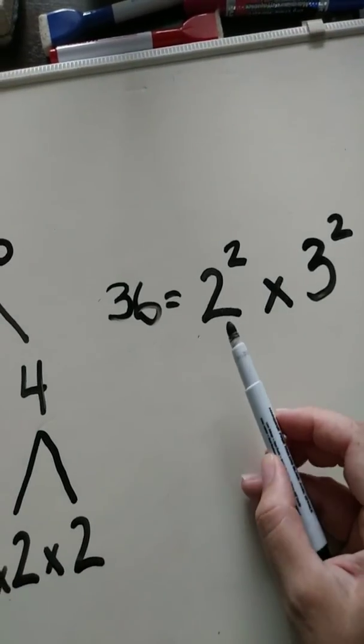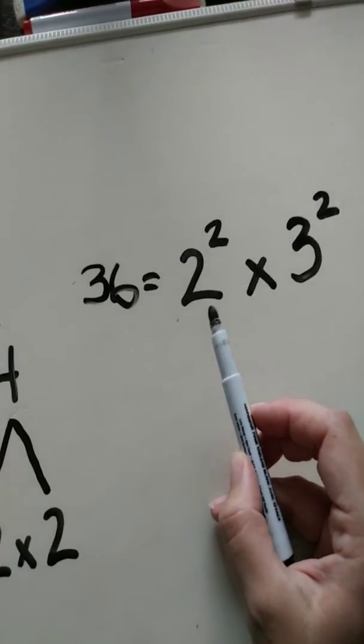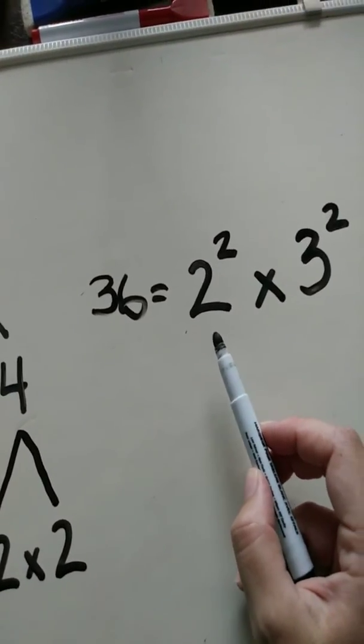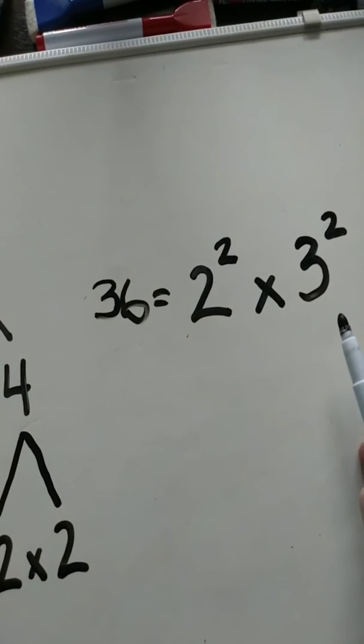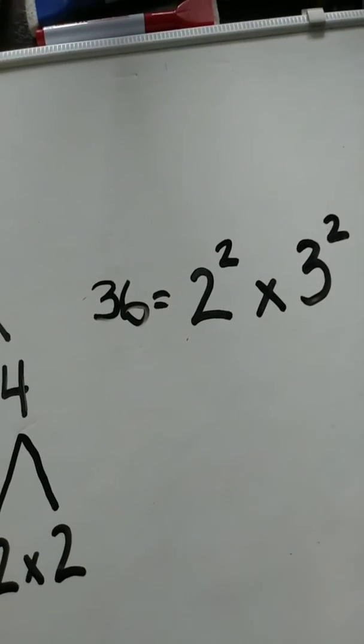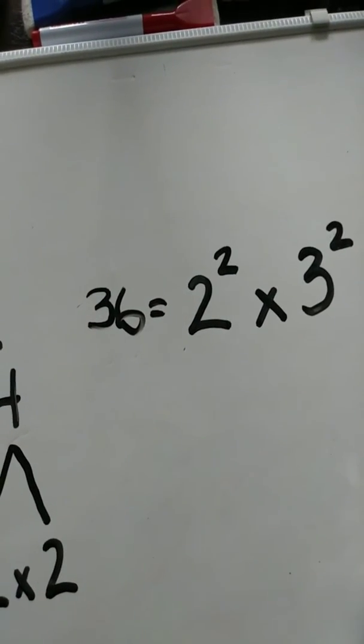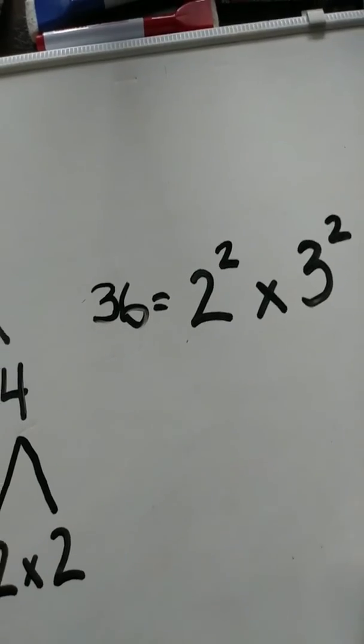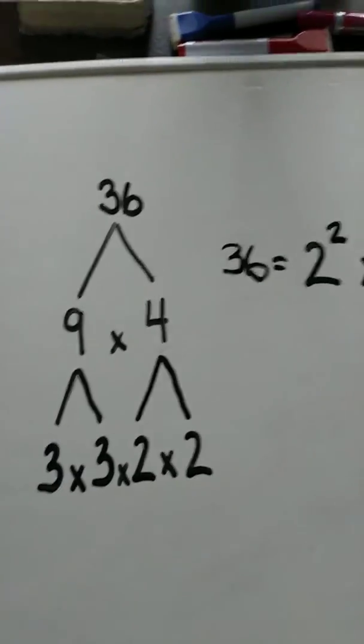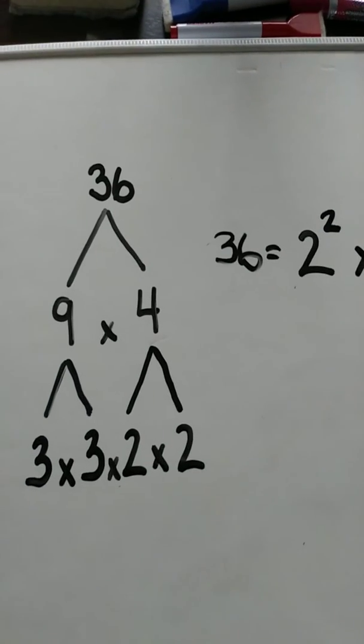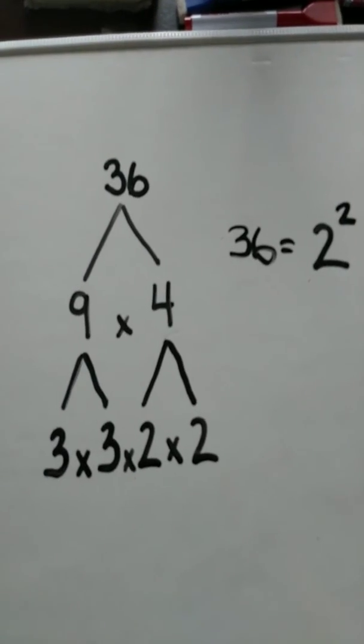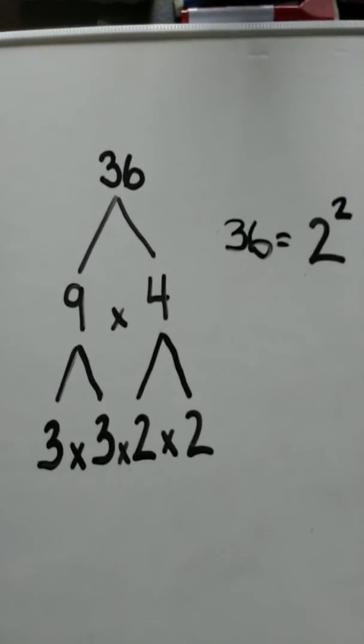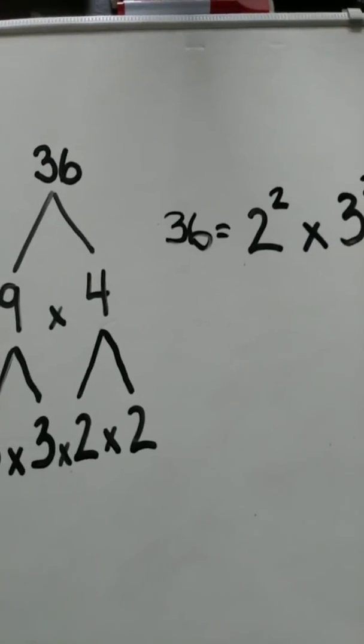And also notice that you always put the smaller number first. So, you're putting in an increasing order to make sure, again, to keep it organized and to make sure you didn't forget any numbers. So, that's the first intro for a smaller factor tree. And then tune into the next video where we'll do a triple digit and break that down into another factor tree.